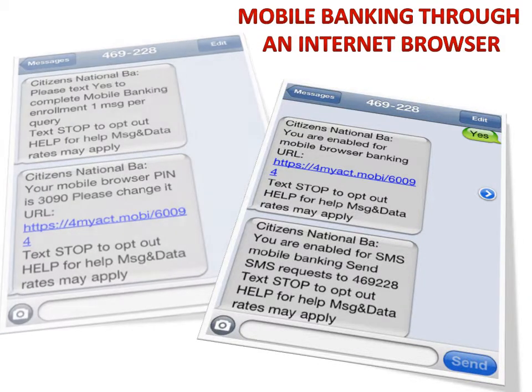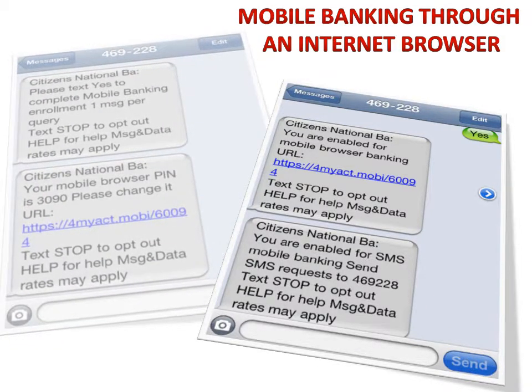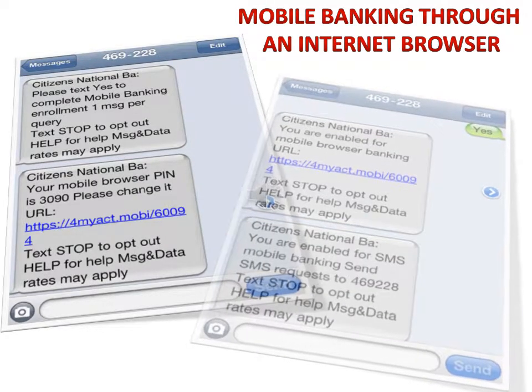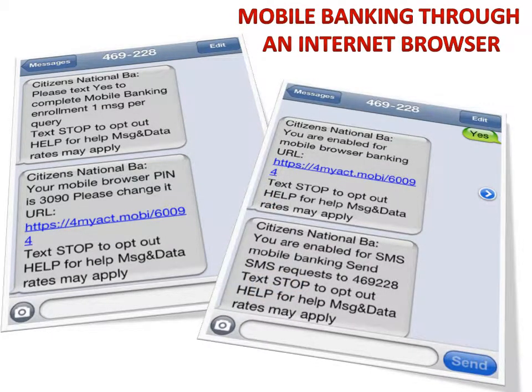After you enroll, you will receive two text messages. The first requesting you to reply yes to finish your enrollment. The second will provide you with the URL for the mobile site. Once you have replied yes, you will receive two more text messages confirming your enrollment and providing you with a six-digit number for text banking.